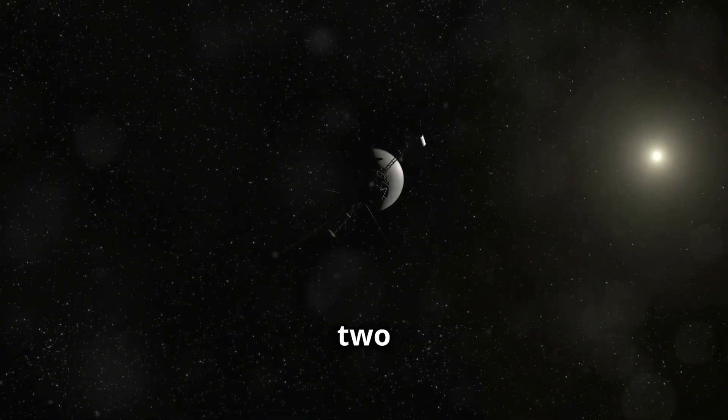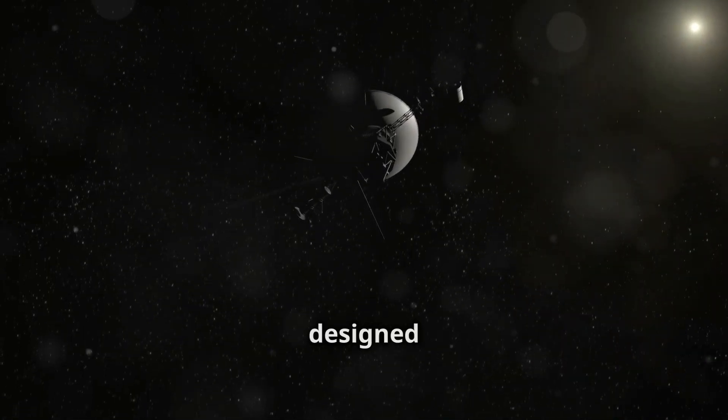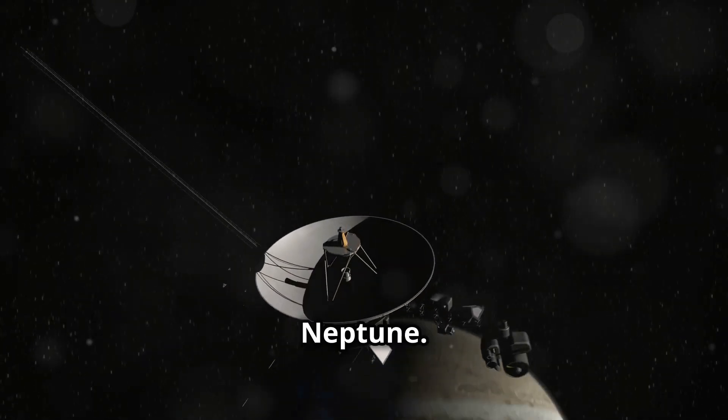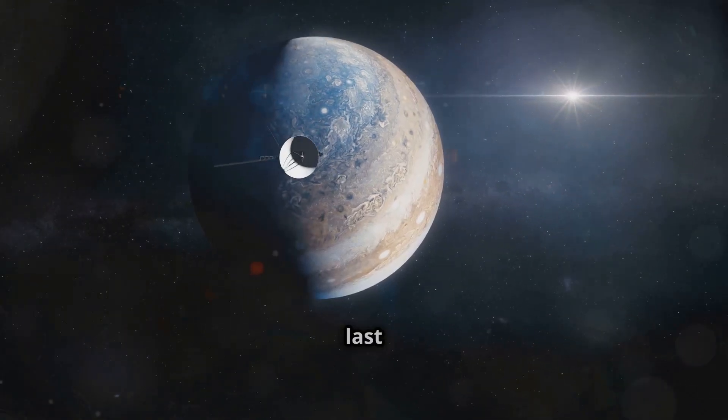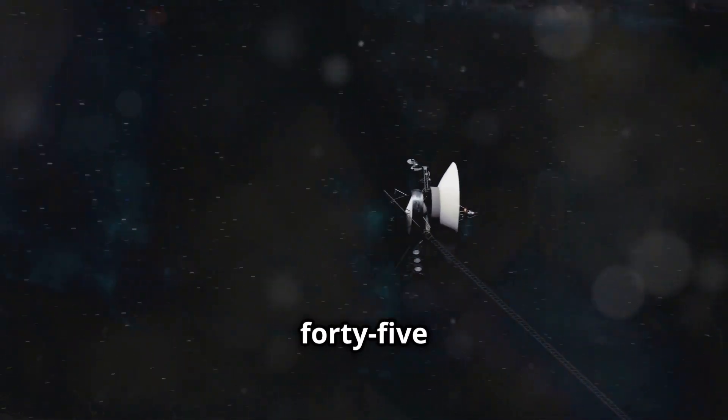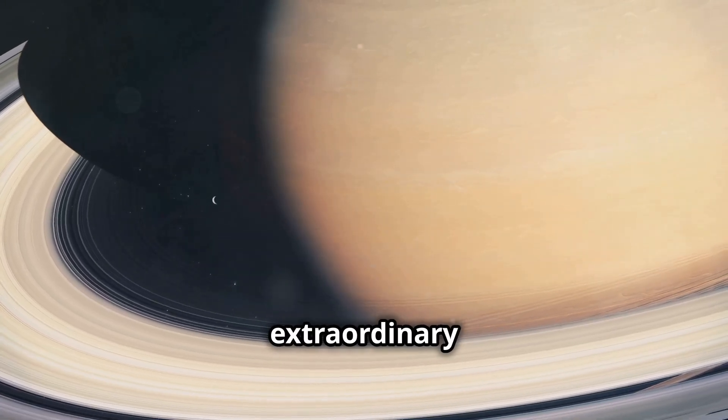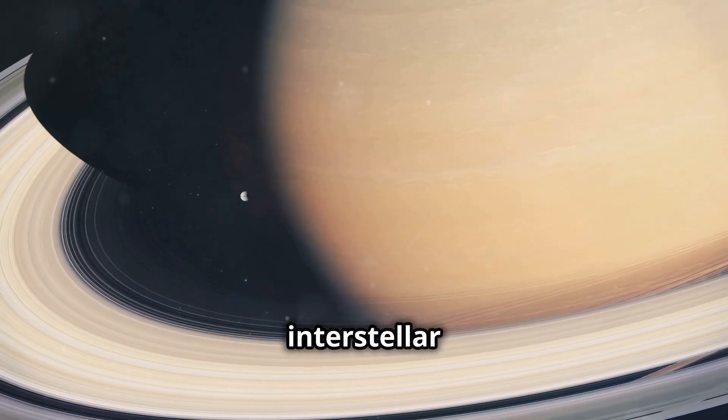Voyager 1 and Voyager 2 launched in 1977, designed to explore the outer planets: Jupiter, Saturn, Uranus, and Neptune. These spacecraft were built to last five years but have continued their mission for over 45 years. Why? Because they're doing something extraordinary, carrying humanity's first interstellar message.